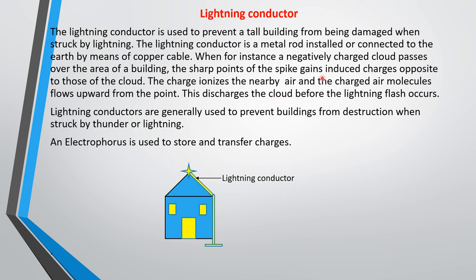Any charge or electrons released will be conducted straight to earth, so the effect of the lightning on the building is totally minimized. Lightning conductors are generally used to prevent buildings from destruction when struck by thunder or lightning — when the cloud releases electrons, the lightning conductor conducts them straight to the earth and neutralizes the effect. Also, the electrophorus is an instrument used to transfer charges.